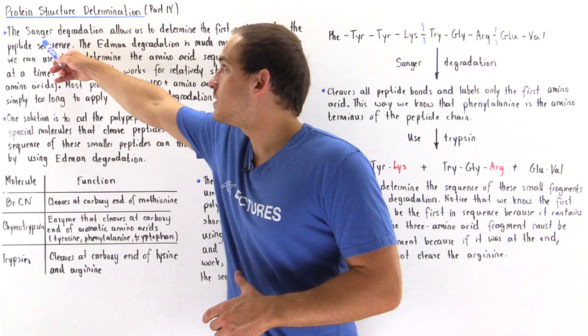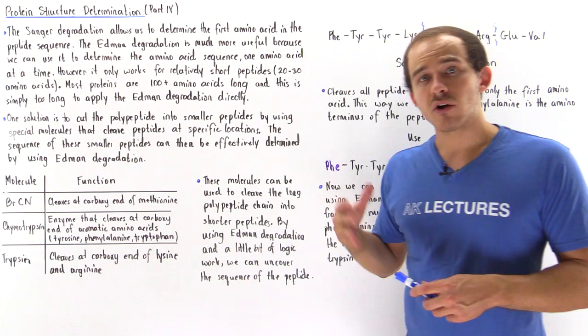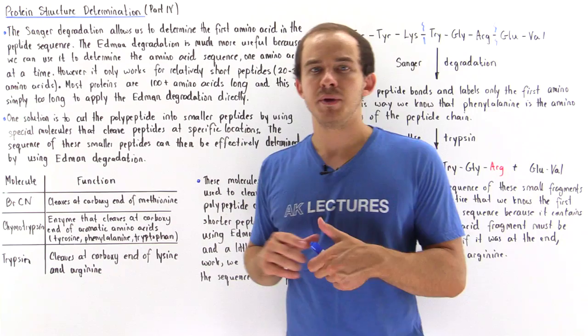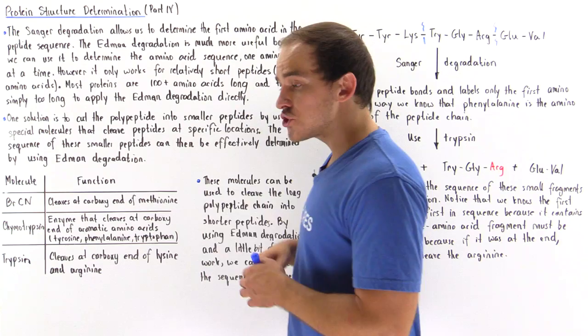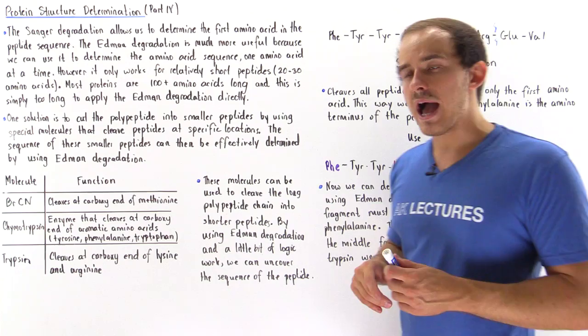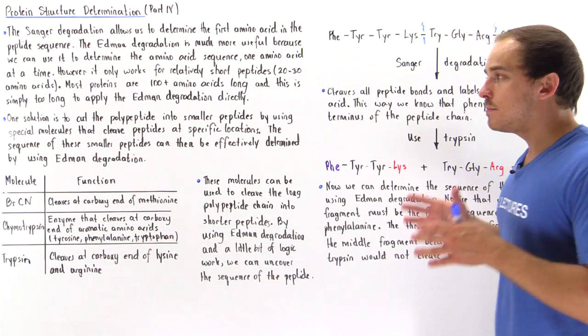The Sanger degradation allows us to determine what the first amino acid in our sequence is. The more useful process is the Edmond degradation, which allows us to determine the entire sequence of amino acids in our peptide. However, the Edmond degradation only works when the peptide is relatively short, and most proteins consist of at least 100 amino acids, meaning we cannot apply it directly.